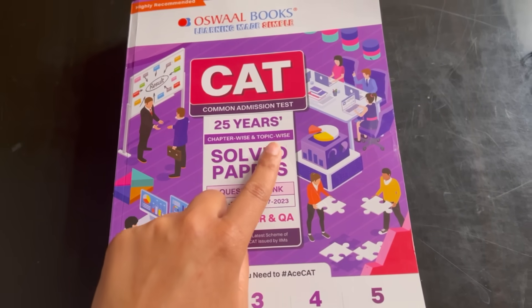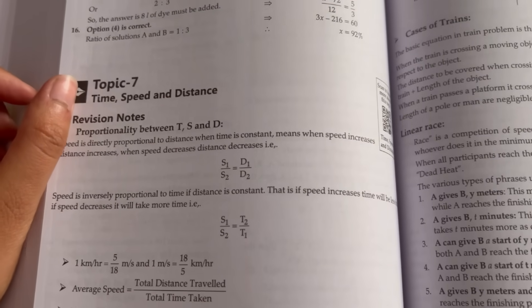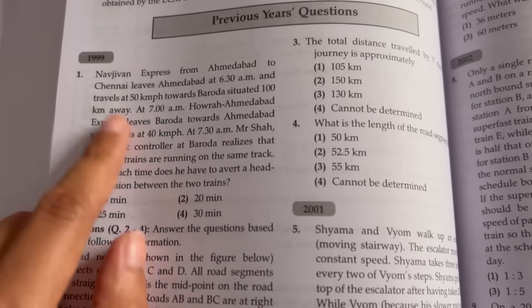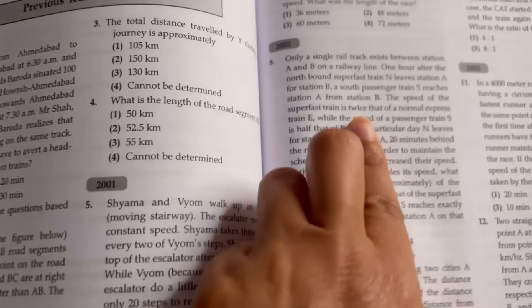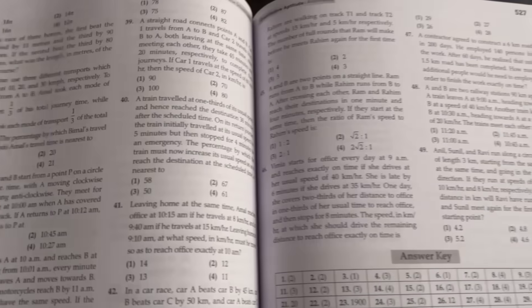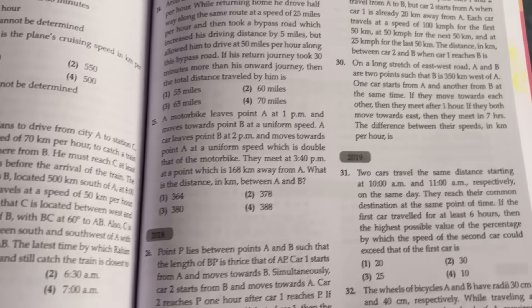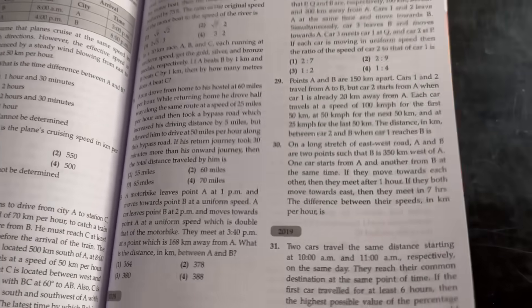Oswal Books comes, which is called CAT 25 Year Past Papers. In this case, every year, every single year, questions are mentioned in different sections. But how are they mentioned? Chapter wise. Like if I talk about quant, time, speed and distance, there is a chapter. In that case, all the questions in 25 years, every year, they are mentioned in it.